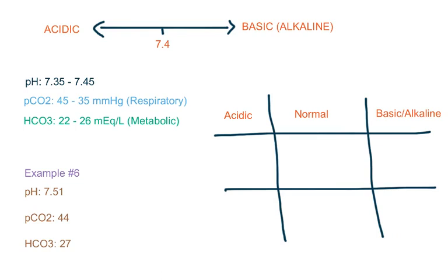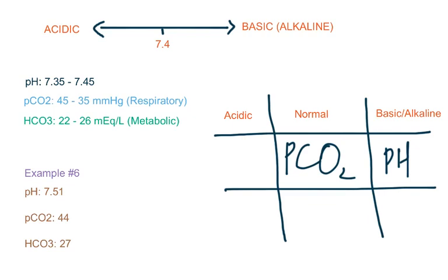Here's another one. pH is 7.51, which means it is on the alkaline side. pCO2 is 44, which is between 35 to 45, so that's normal. Bicarb is 27, which is more than 26, so it is alkaline. So this is alkalosis — metabolic alkalosis.